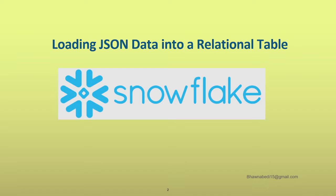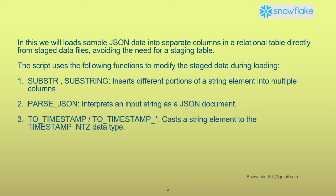In that previous scenario, the JSON data came as-is into one column. But now what we will try to do is: for JSON data, we will try to parse that JSON, flatten it, and load it into proper columns. We will see how it can be loaded into a relational table directly from the stages.